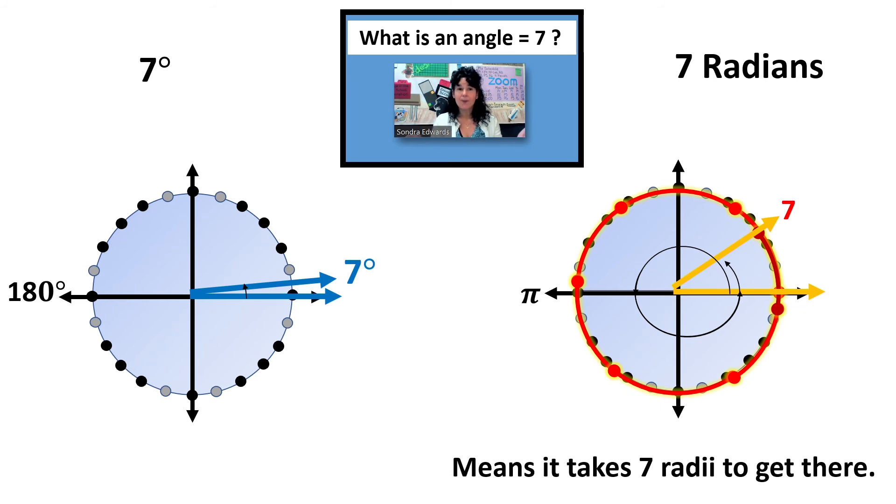So be sure to look to see if you have a label of degrees. And it's frankly that simple. Am I in degrees or am I in radians? Do you see a degree symbol? If you do not see a degree symbol, you know that you are in radians.